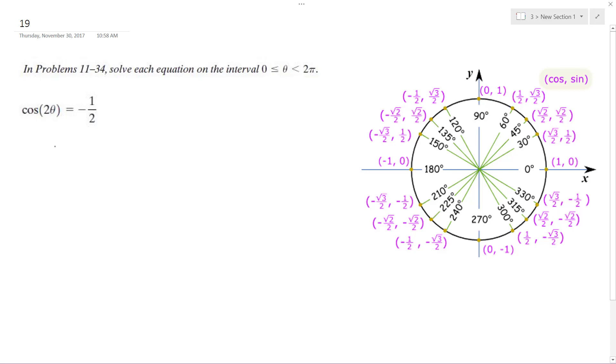Solving this problem, we want to find out where cosine double angle equals negative one-half. So I'm going to take the inverse cosine of both sides.